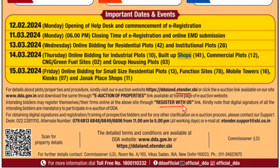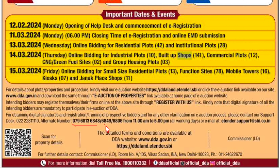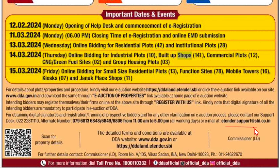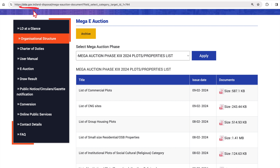You need to register on etender.sbi to participate. All properties can be scanned using the QR code to fetch property details, or you can visit the official websites. For further doubts, you can contact DDA officials at the official numbers shared — timings are 11 AM to 5 PM on all working days. For e-auction participation queries, email etendersupport@sbi.co.in.